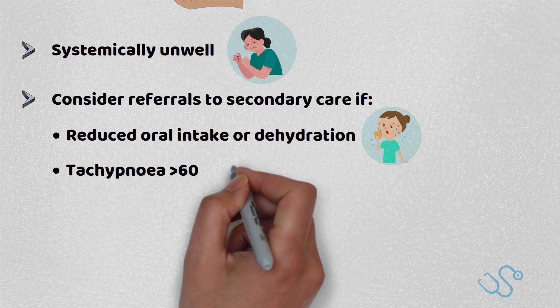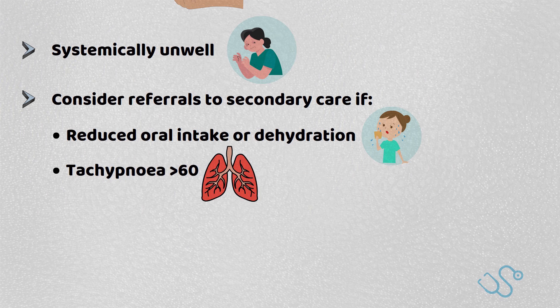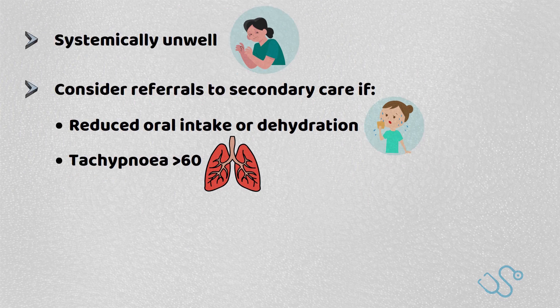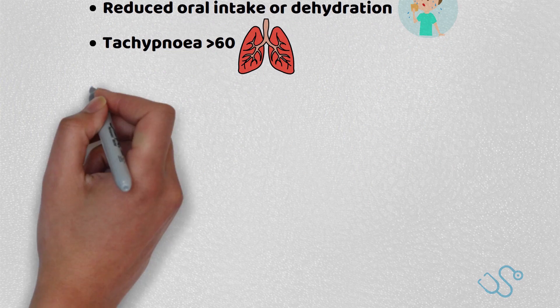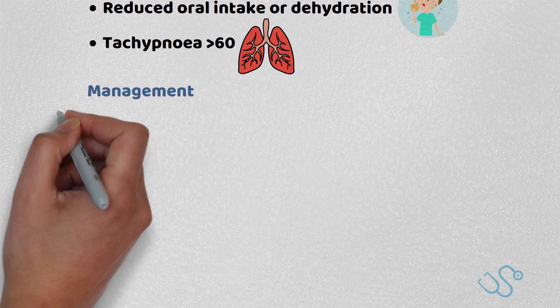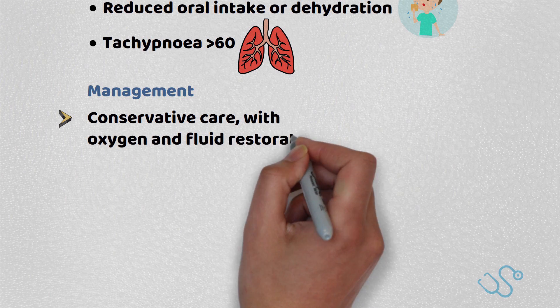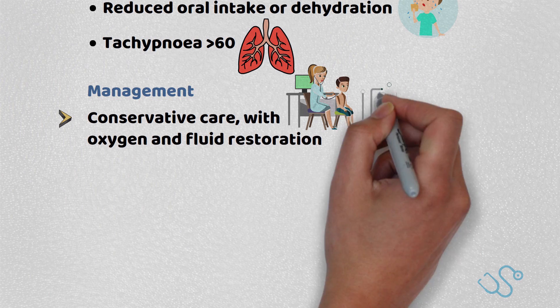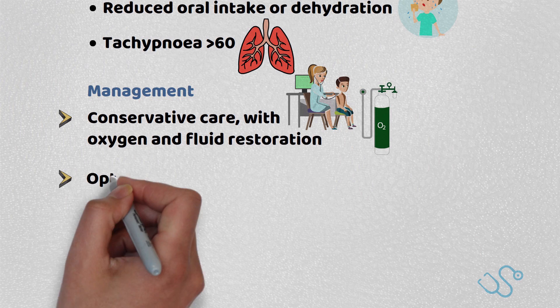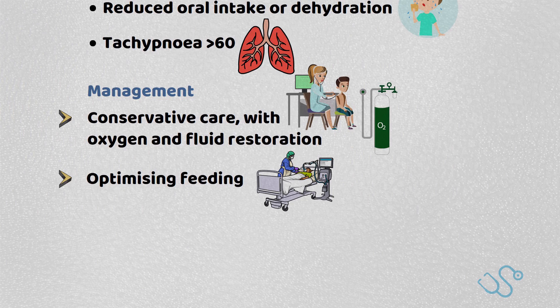Emergency admission should also be considered if there is tachypnoea with a respiratory rate above 60. Management usually revolves around conservative care, with oxygen and fluid restoration key, as well as optimising feeding.